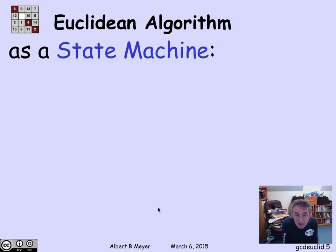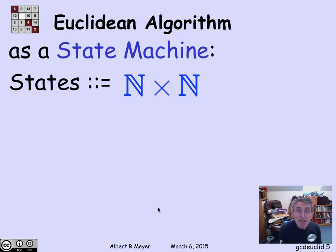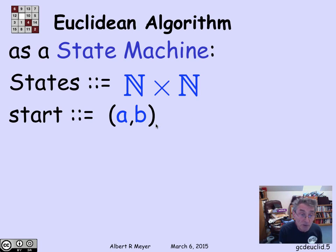It's a good exercise in state machine thinking and practice in program verification to reformulate the Euclidean algorithm, or formulate it explicitly as a state machine. It's a very simple kind of state machine. The states of this Euclidean algorithm state machine will be pairs of non-negative integers. The start state is going to be the pair a, b, whose GCD I want to compute.